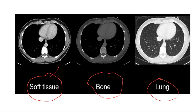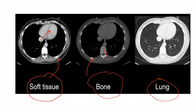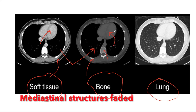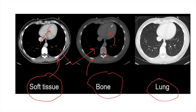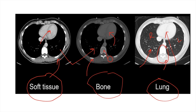In the soft tissue window, we see the soft tissue structures — the chest wall and the mediastinal structures. Hence it is also known as the mediastinal window. In the bone window, we can appreciate bony pathologies like fractures, bone lesions, and bone tumors. In both the soft tissue window and the bone window, the lungs appear totally dark and it is not possible to evaluate lung pathologies. In the bone window, mediastinal structures are also faded, so it is not possible to evaluate mediastinal or soft tissue pathologies in that window.